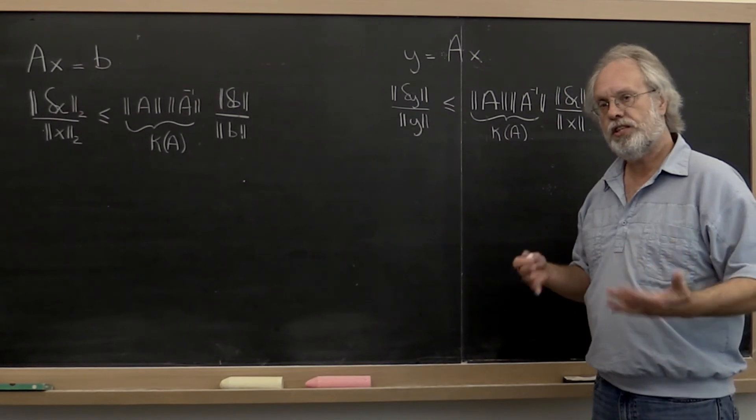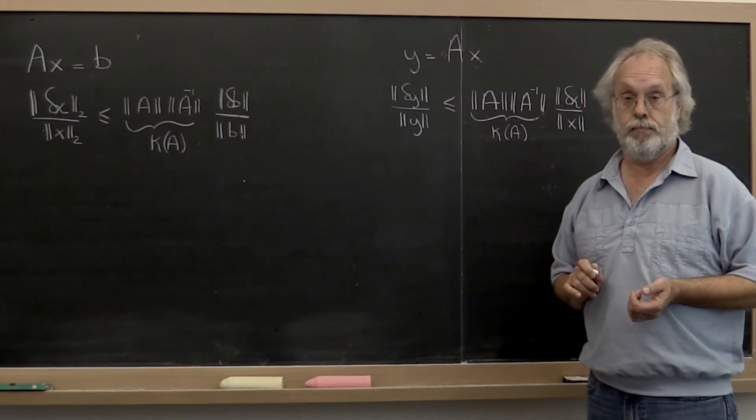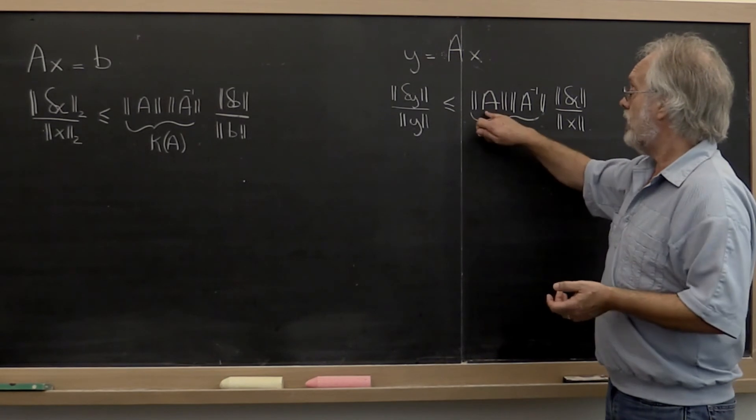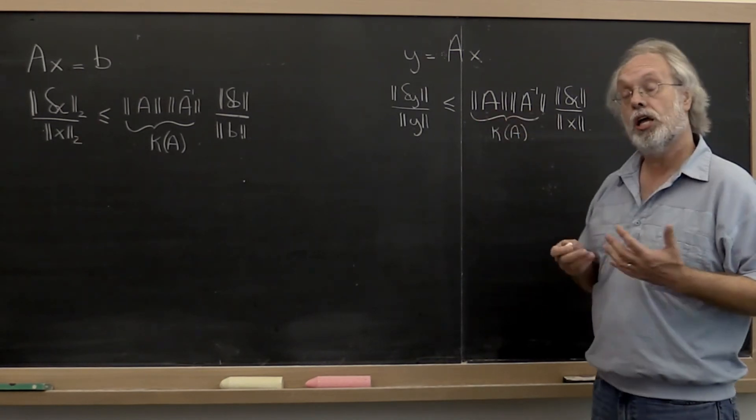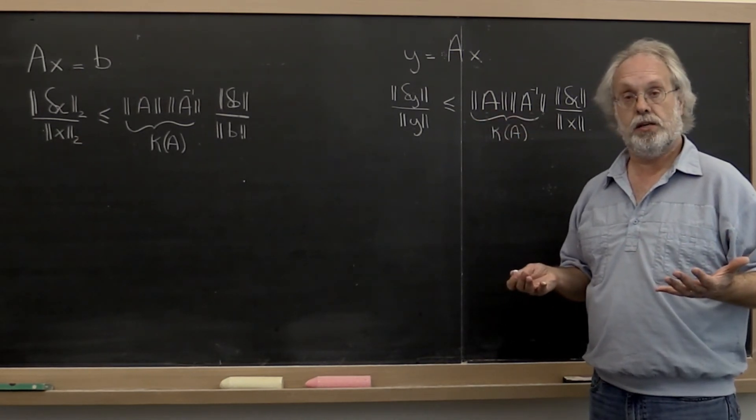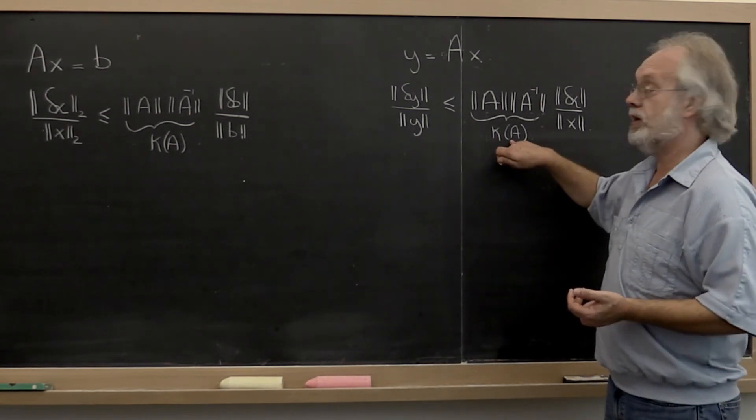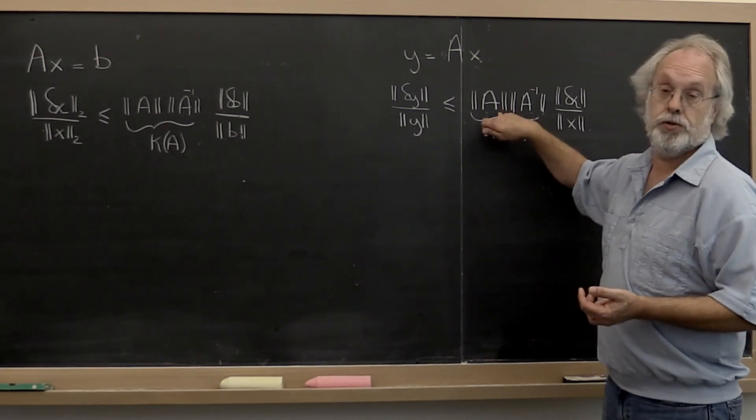Well, it turns out that if you choose your norm to be the 2 norm and you only employ unitary matrices, unitary matrices have a condition number equal to 1 when you use the 2 norm.